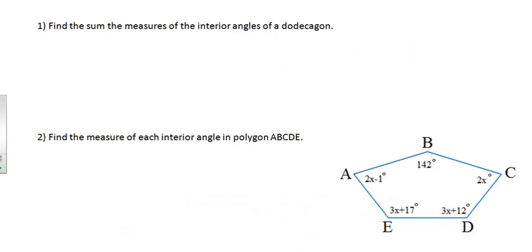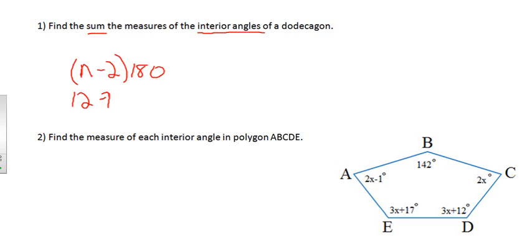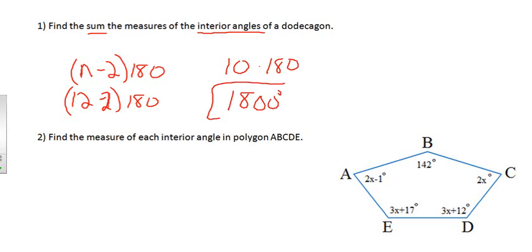Let's try some sample problems. Problem 1: find the sum of the measures of the interior angles of a dodecagon. For interior angles, I'll use the (n − 2) × 180 formula. A dodecagon has 12 sides, so 12 minus 2 times 180 is 10 times 180, which equals 1,800 degrees. If you drew out a dodecagon and drew all those diagonals in, you would get 10 triangles.